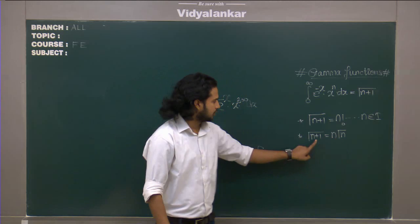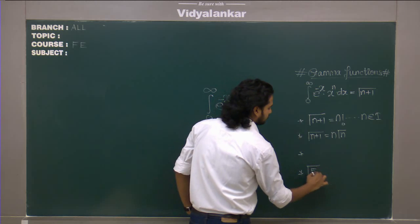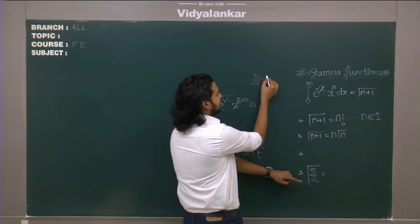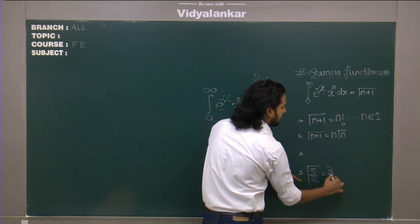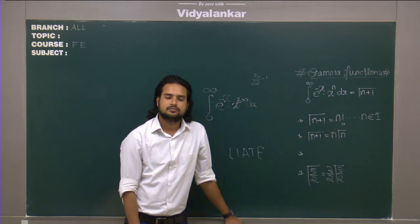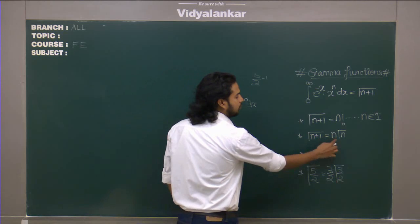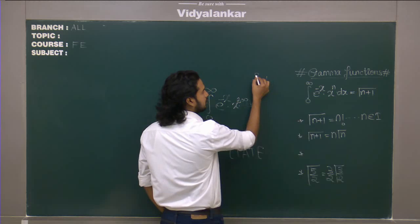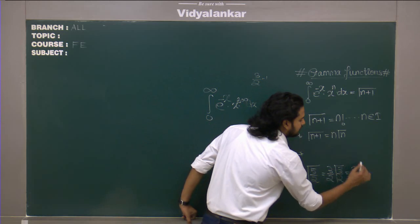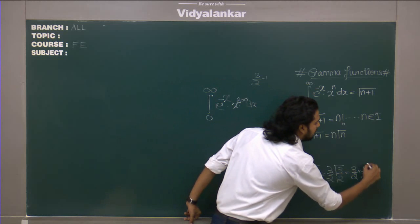So if somebody asks you gamma 5 by 2, then I can write it as gamma 5 by 2, so 5 by 2 minus 1 will give you 3 by 2. So it becomes 3 by 2 gamma 3 by 2. But still this gamma 3 by 2 is making a problem. What I can do is I can again apply the same formula. So I have gamma 3 by 2 reduce it by 1. I get 3 by 2 as it is. Gamma 3 by 2 will become 3 by 2 minus 1, 1 by 2, 1 by 2 gamma 1 by 2.